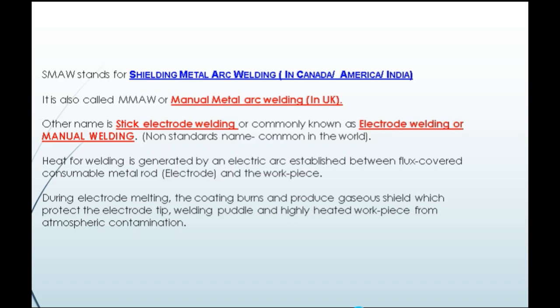Heat for welding is generated by an electric arc established between a flux-covered consumable metal rod — the electrode — and the workpiece. During electrode melting, the coating burns and produces a gaseous shield which protects the weld.